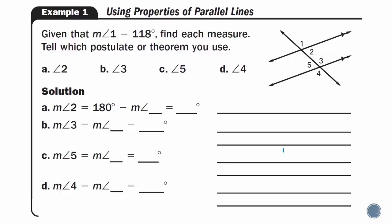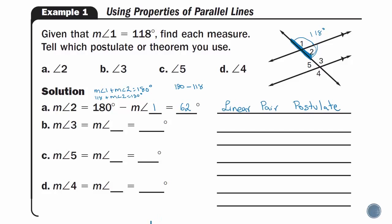Example 1, using properties of parallel lines. Given that the measure of angle 1 is equal to 118 degrees, find each measure and tell which postulate or theorem you use. For part A, finding the measure of angle 2: angle 1 and angle 2 are on the same straight line, so the measure of angle 1 plus the measure of angle 2 equals 180 degrees — that is the linear pair. So 118 plus the measure of angle 2 equals 180, which gives the measure of angle 2 as 62 degrees, using the linear pair postulate. For part B, finding the measure of angle 3: angle 1 and angle 3 are in the same location in my box, so the measure of angle 1 equals the measure of angle 3, which is 118 degrees, because they are corresponding angles — using the corresponding angles postulate.